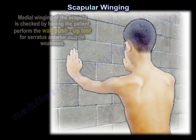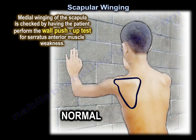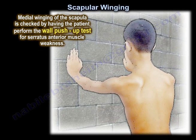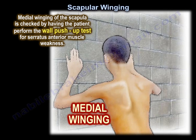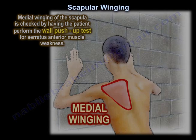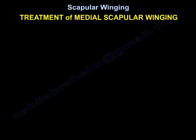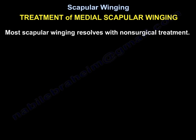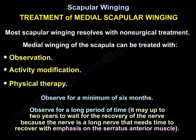Medial winging of the scapula is assessed using the wall push-up test for serratus anterior muscle weakness. Treatment of medial winging: most scapular winging resolves with non-surgical treatment. It can be treated with observation, activity modification, and physiotherapy.